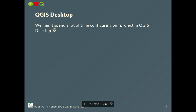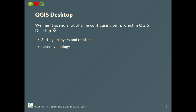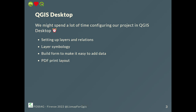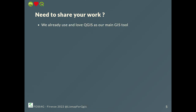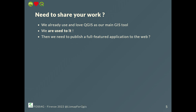So QGIS desktop — I guess you are spending already quite a lot of time on this software, setting up layers and relations. You are doing your symbology with the very powerful rendering engine in QGIS. You are building forms to make it easy to add data and to avoid errors. You are doing PDF print layouts with Atlas enabled or not, et cetera. We do quite a lot of things already in QGIS desktop, like doing an isochrons analysis. And at some point, we want to share the data on the internet, like having an application running on the web.